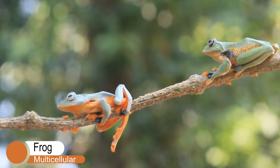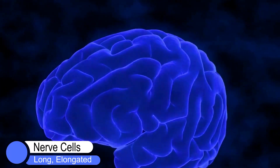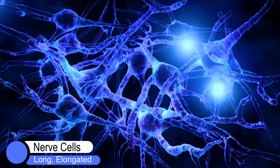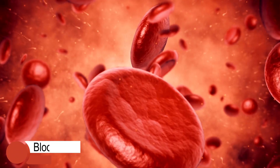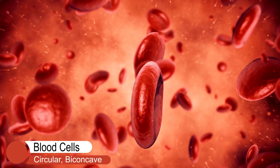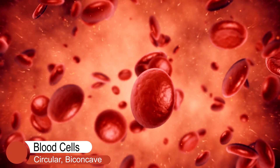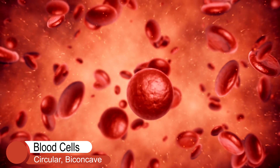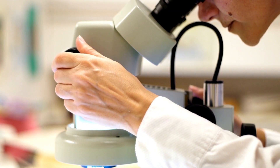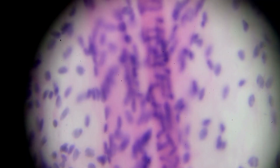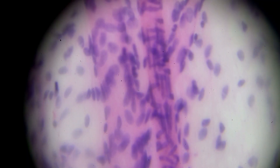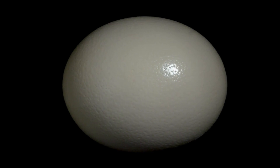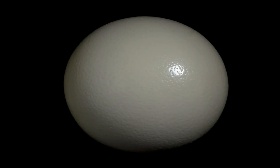Cells differ in shape and size. For example, nerve cells are long and elongated, while blood cells are circular and biconcave. Most cells are microscopic, but there are cells that you can see with unaided eyes. An example is an ostrich egg cell, the largest cell in the world.